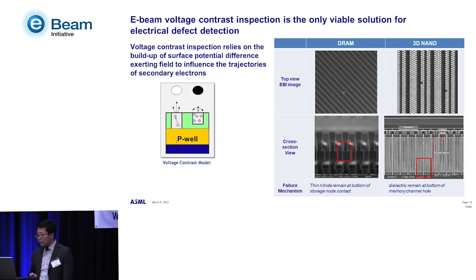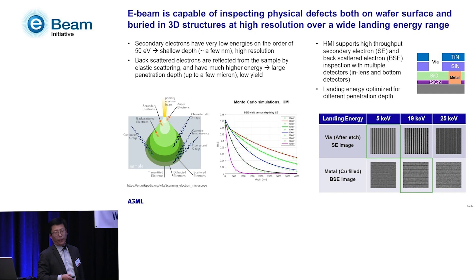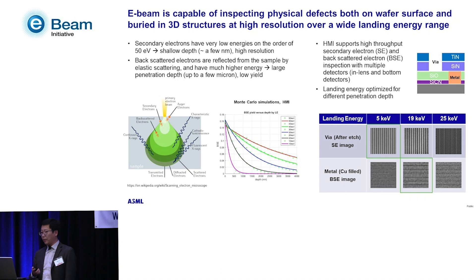E-beam is also capable of looking at physical defects both on the wafer surface and in bare structures. Looking at the interaction between the e-beam and the sample, with higher landing energy we see more signal from backscattered electrons. In this example, at a landing energy of 19 keV, looking at the backscattered electrons rather than secondary electrons, you can actually see the buried structure more clearly. In practice we optimize landing energy and beam current conditions to accentuate the appearance of buried structures or buried defects.